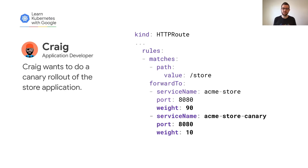Let's say a couple months have passed and Craig is starting to realize just how useful it would be to have canary rollouts for his app. Fortunately, that's really easy to add with this API. With just a few lines of YAML, he can send 10% of traffic to his new canary service.